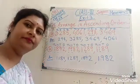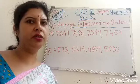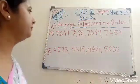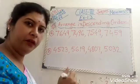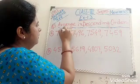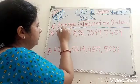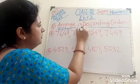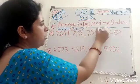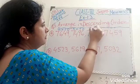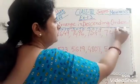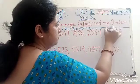Clear children? Now our next question is: arrange in descending order. So first of all we put down the place values — 1's, 10's, 100's, 1000 — for each of the four numbers.